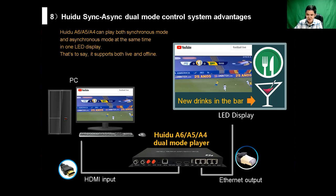They can play live video from HDMI inputs, and meanwhile also play offline advertising content from their built-in memory. For example, even one LED screen in a bar can play a live broadcast at the same time as stored advertising content — such as promotions for new drinks in the bar. See this working diagram.